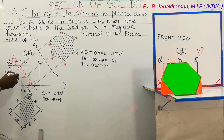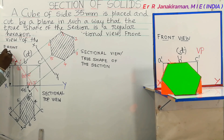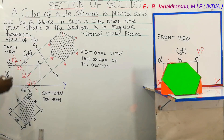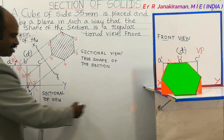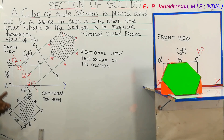This is called the front view, and this is a sectional part called the front view. Below the diagram you can write all dimensions in mm. Practice with your drafter scale and get the most from it. Thanks for listening.